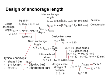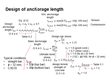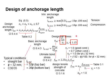The basic anchorage length is given in clause 8.4.3. It is a function of the bar diameter times the design bar stress divided by 4 times the ultimate bond stress. The design bar stress is equal to the specified yield strength divided by the factor of safety for steel, which is equal to 1.15.